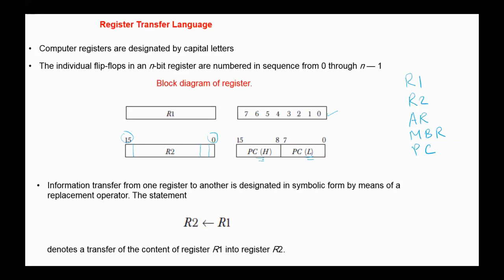Information transfer from one register to another is designated in symbolic form by means of a replacement operator. This statement denotes a transfer of the contents of register R1 to register R2. The contents of register R1 are unchanged, while we lose the contents of register R2 — they are replaced by the contents of register R1.